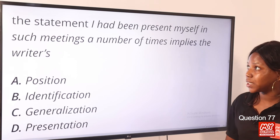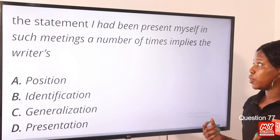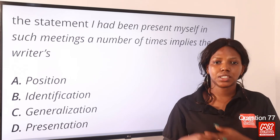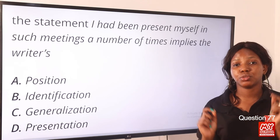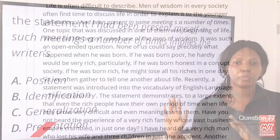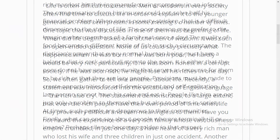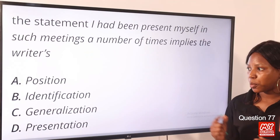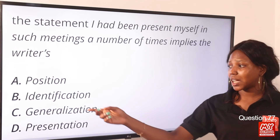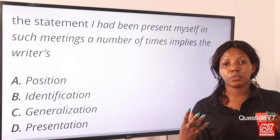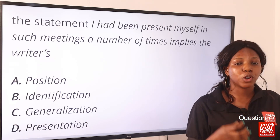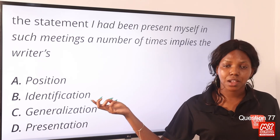Question 77. The statement 'I have been present myself in such meetings a number of times' implies the writer's — option B — identification. Questions 77 to 80 come with another passage; read it carefully. The answer is identification because the writer identifies himself as one of the men of wisdom who gather to discuss life with the younger generation. Option B is the correct answer.